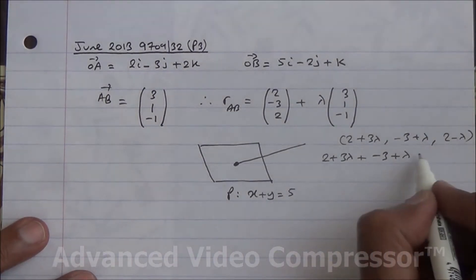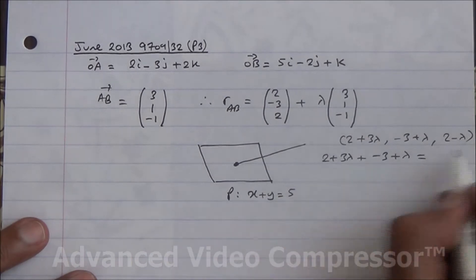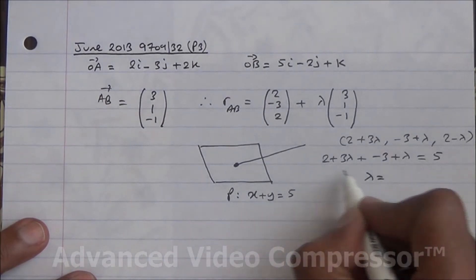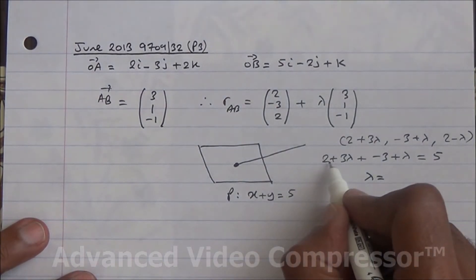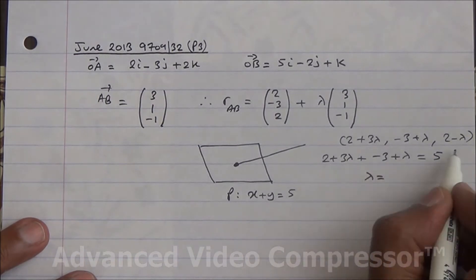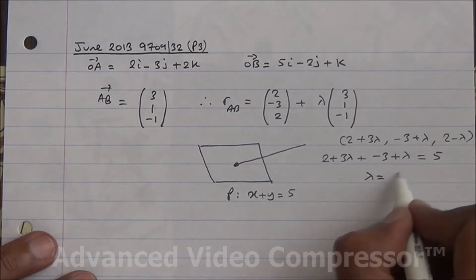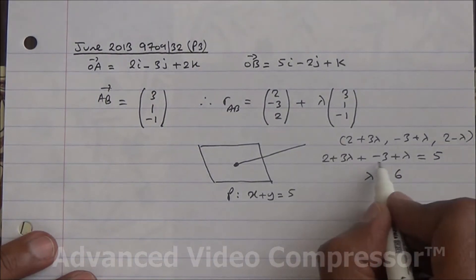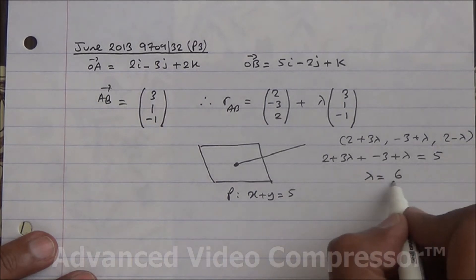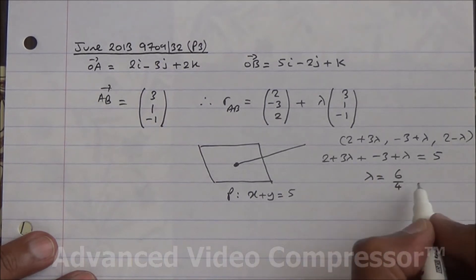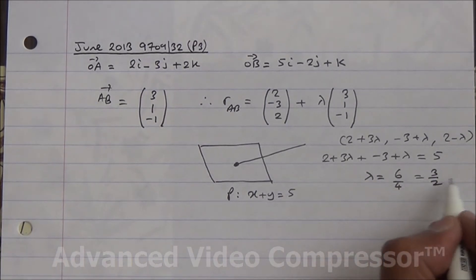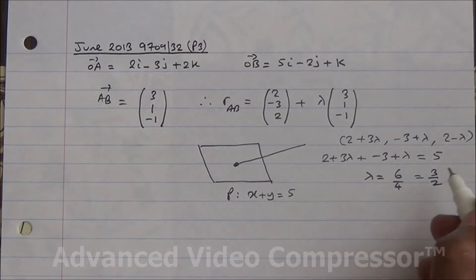Solving: 2 minus 3 is minus 1; sending minus 1 to the other side gives plus 1, so 5 + 1 = 6. Then 3λ + λ = 4λ; sending 4 to the other side gives divide, so λ = 6/4 = 3/2.